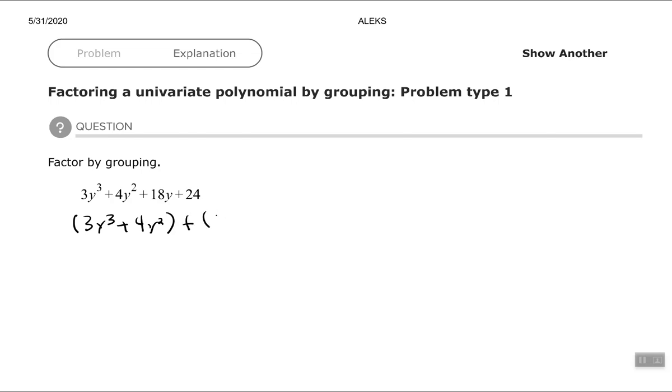Remember, on that first step, we always have a plus in between the two parentheses. Step number two is to factor the common factor out of each of the binomials. So the common factor for 3y³ and 4y². The only thing that'll go into three and four is one, but both those terms have y. So the greatest common factor for y³ and y² is y².